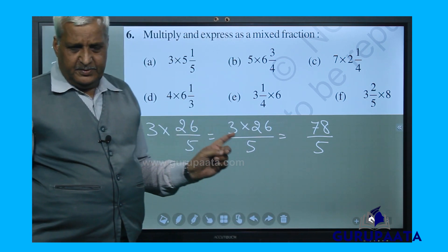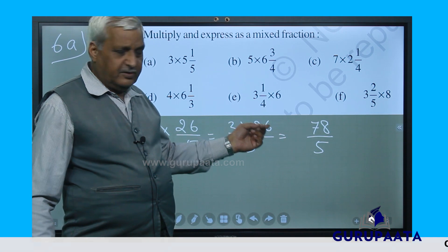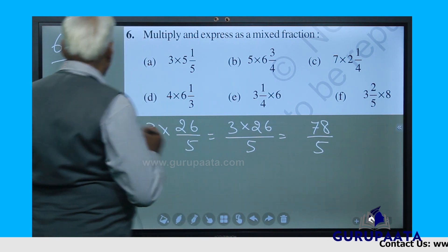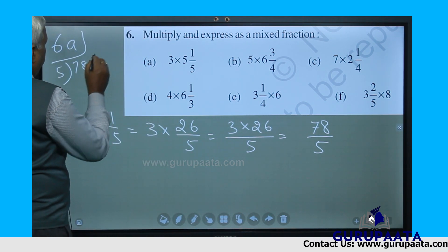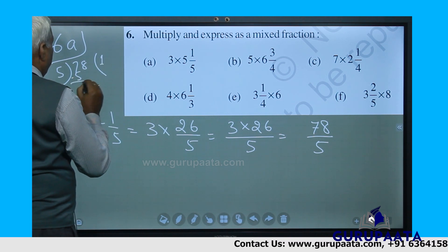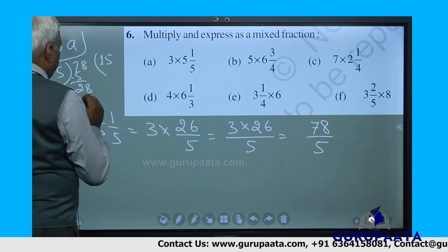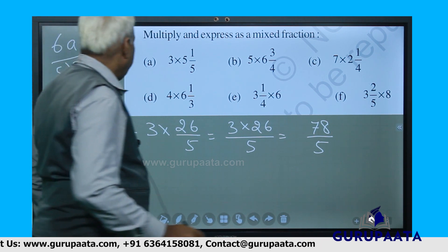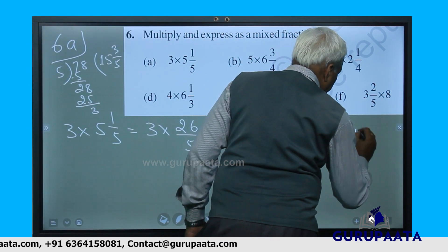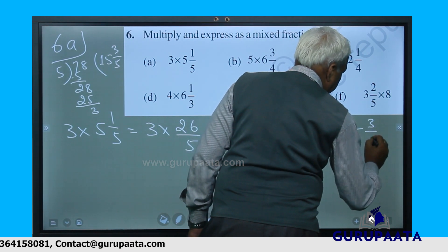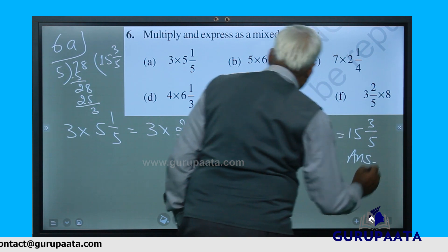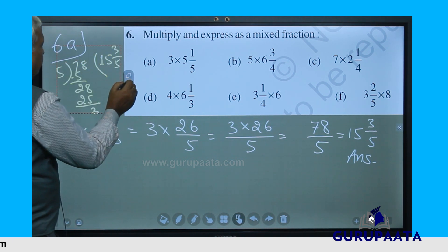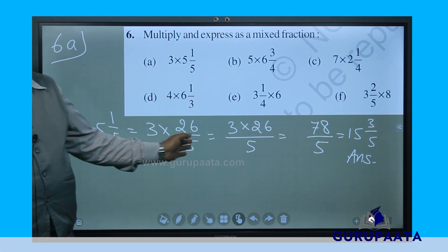78 by 5 is an improper fraction, so we need to change it to a mixed number. Dividing 78 by 5: 5 ones are 5, then 5 fives are 25, remainder 3. So the answer is 15 and 3 by 5. I am erasing the working to avoid confusion. Our answer for 6a is 15 and 3 by 5.